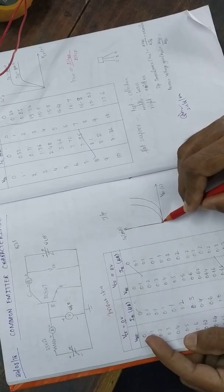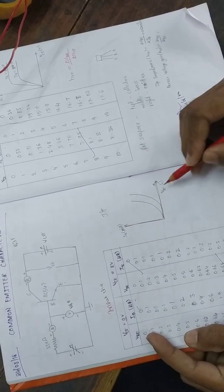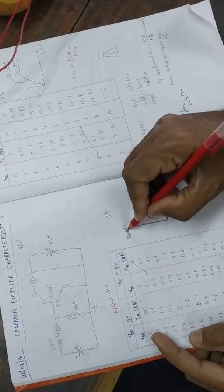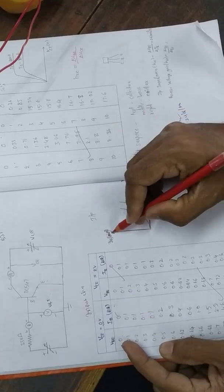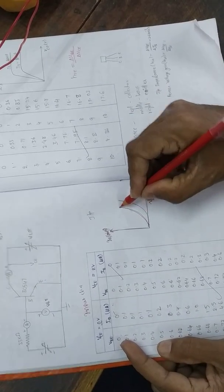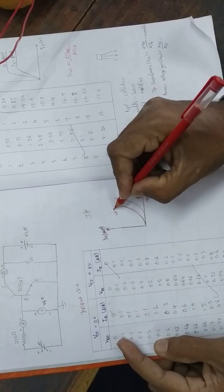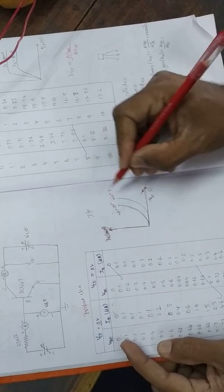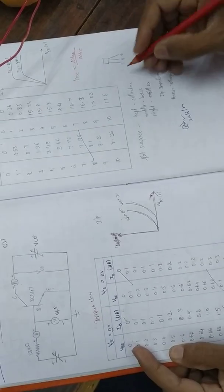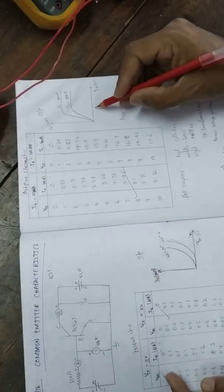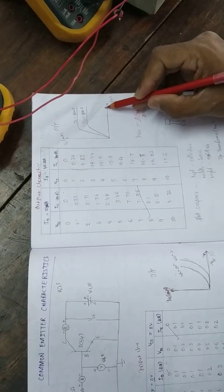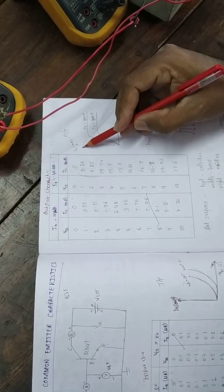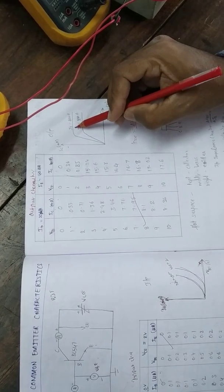For input characteristics, the X axis is VBE and the Y axis is IB in micro amperes. When keeping VCE equal to 0 volts and VCE equal to 2 volts, you get the corresponding characteristic curves. For output characteristics, the X axis is voltage across collector to emitter, and the Y axis is collector current, keeping input current constant.